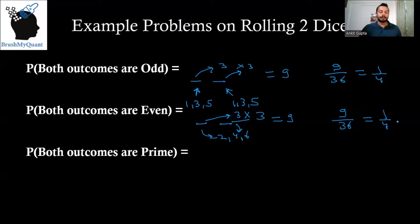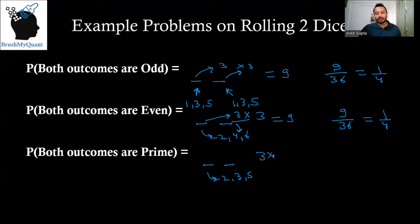What is the probability that both outcomes are prime? Again we have two places. Both places have to be prime, so the numbers can be two, three, or five. That gives three times three — nine choices — and the probability is nine by 36, or one by four.